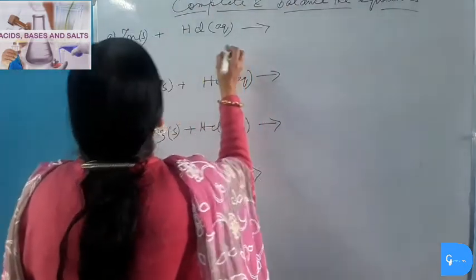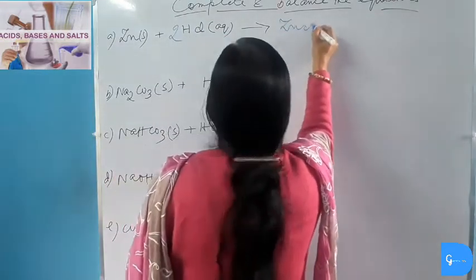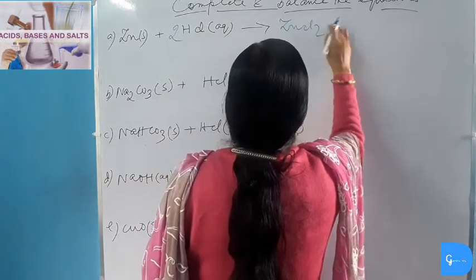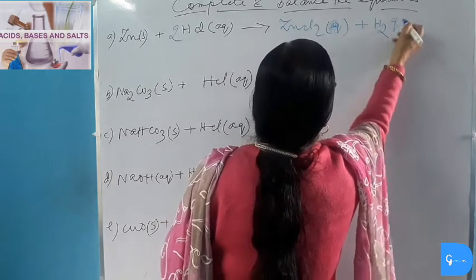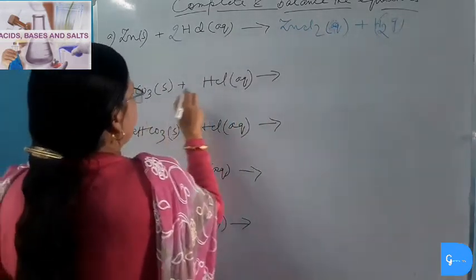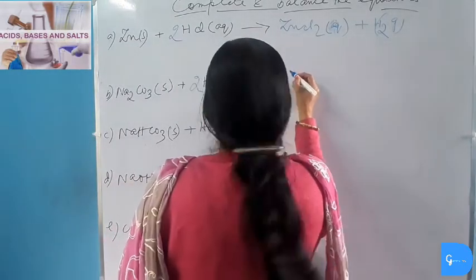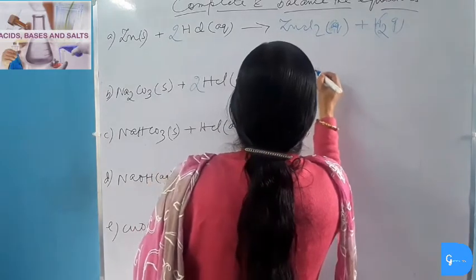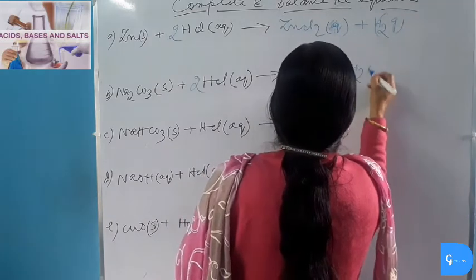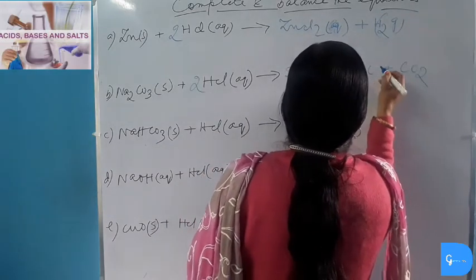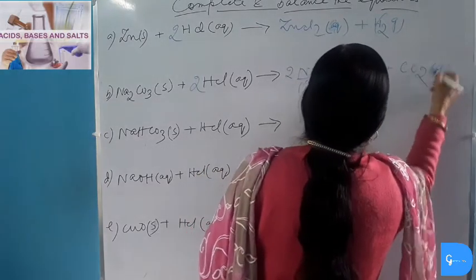When Zinc reacts with Hydrochloric Acid: Zn + 2HCl → Zinc Chloride (aqueous) plus Hydrogen gas. Sodium Carbonate reacts with dilute Hydrochloric Acid: Na₂CO₃ + 2HCl → Sodium Chloride (aqueous, salt) plus Water (liquid) plus Carbon Dioxide gas. Note: the CO₂ product is what distinguishes this from a simple neutralization.